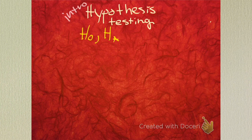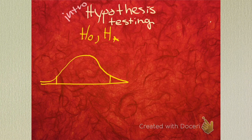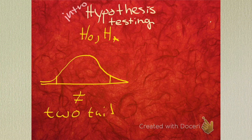Some books use 'A.' Anyway, with hypothesis testing you're going to have a two-tailed test and a one-tailed test. And yes, you are going off the distributions. This test is two-tailed, and that's for not-equal-to. This one's two-tailed. And then you're going to have one-tailed.